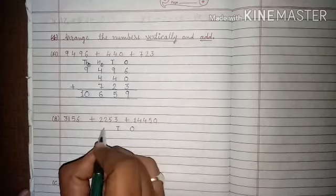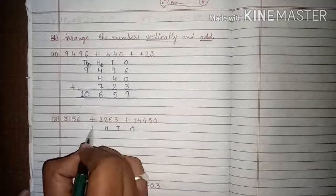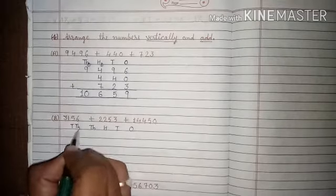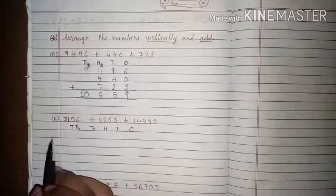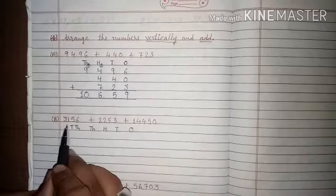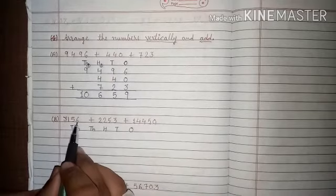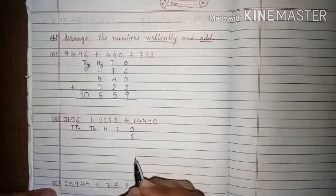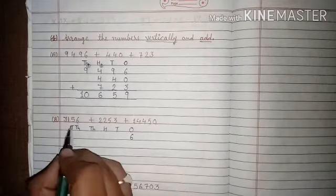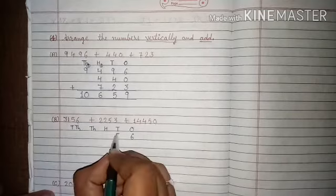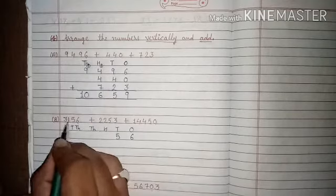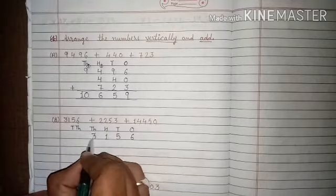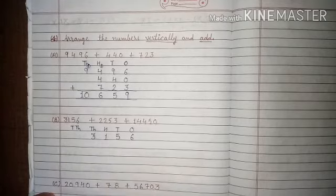Places: ones, tens, hundreds, thousands, ten thousands. Now we start arranging digits. The first number is 3156. Ones place: 6, tens place: 5, hundreds place: 1, thousands place: 3. The first number's digits are arranged.